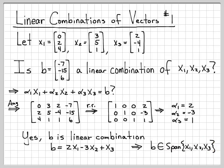We just figured out that b is a particular linear combination of x1, x2, and x3. So b is in this set. That's another way of saying b is a linear combination of x1, x2, and x3.